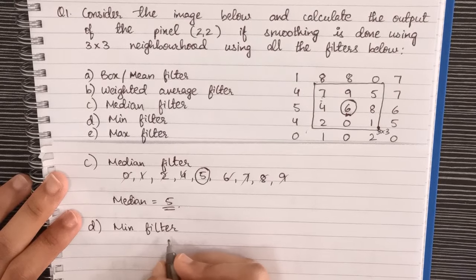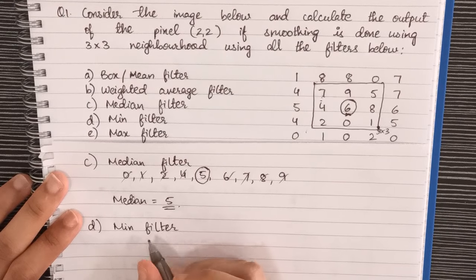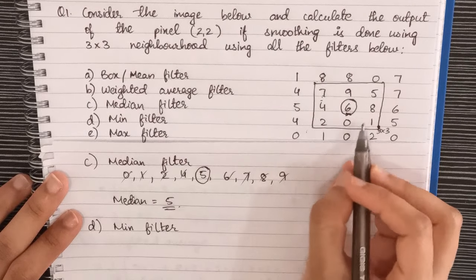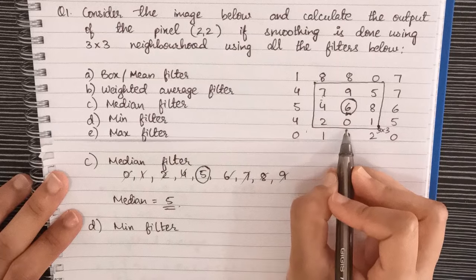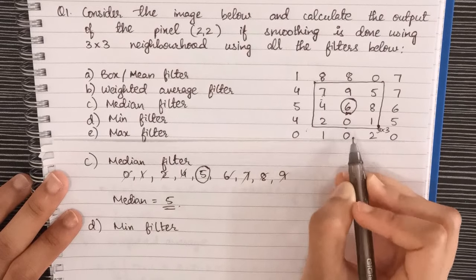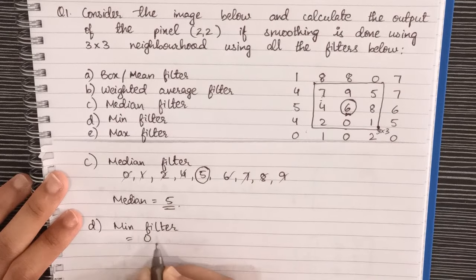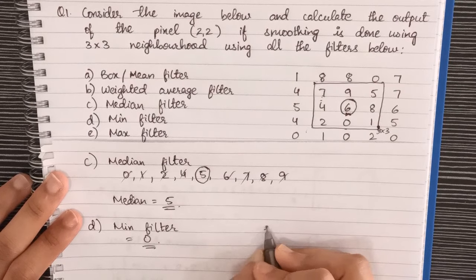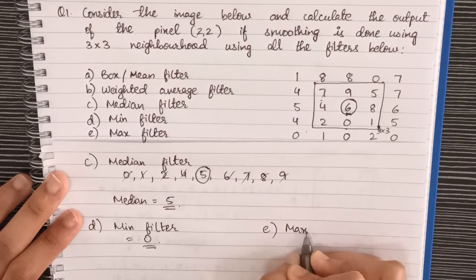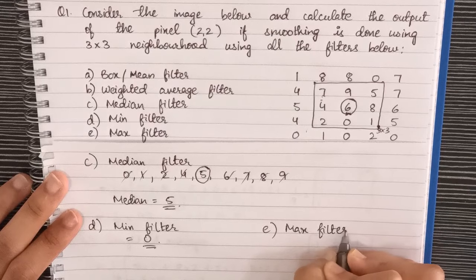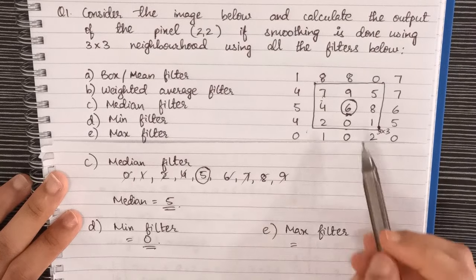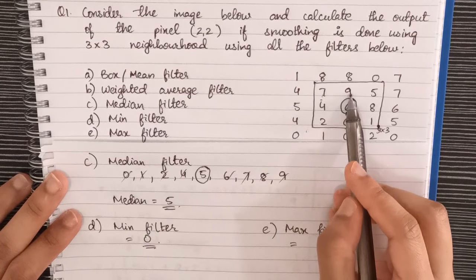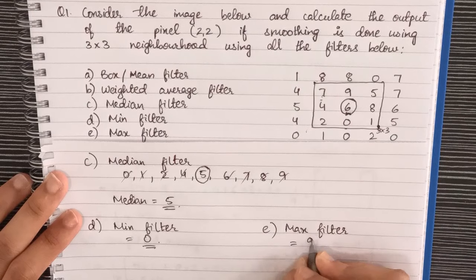Next comes min filter. This is very easy. Here we just calculate the minimum value from all of these values. The minimum pixel value is 0, so therefore the answer is 0. Similarly for max filter, we calculate the maximum value. The maximum value here is 9, so the answer is 9.